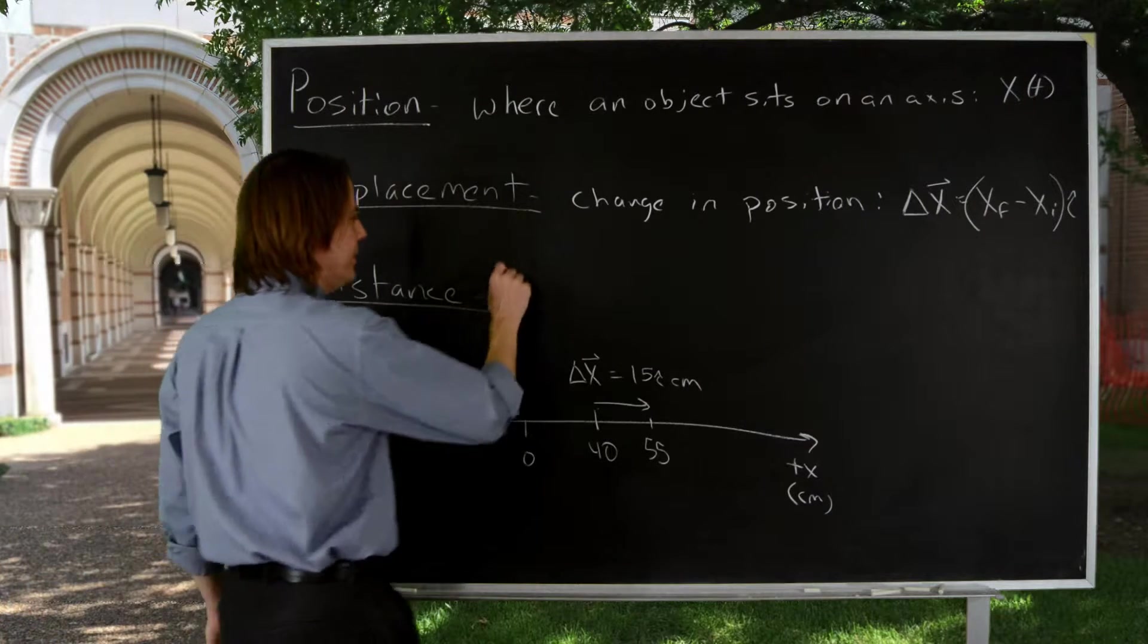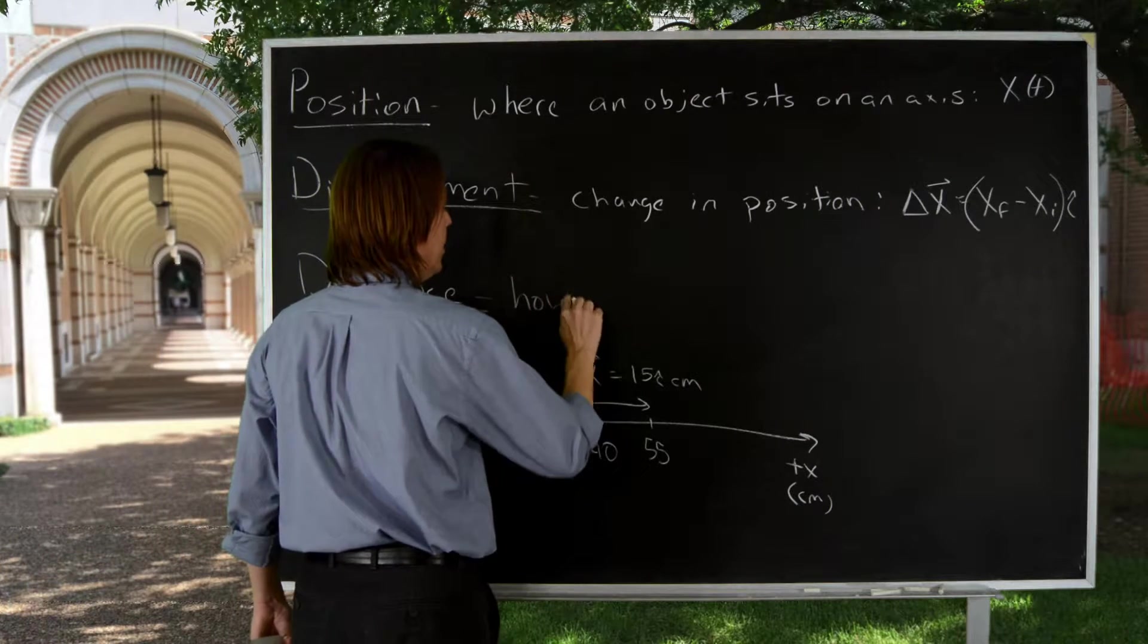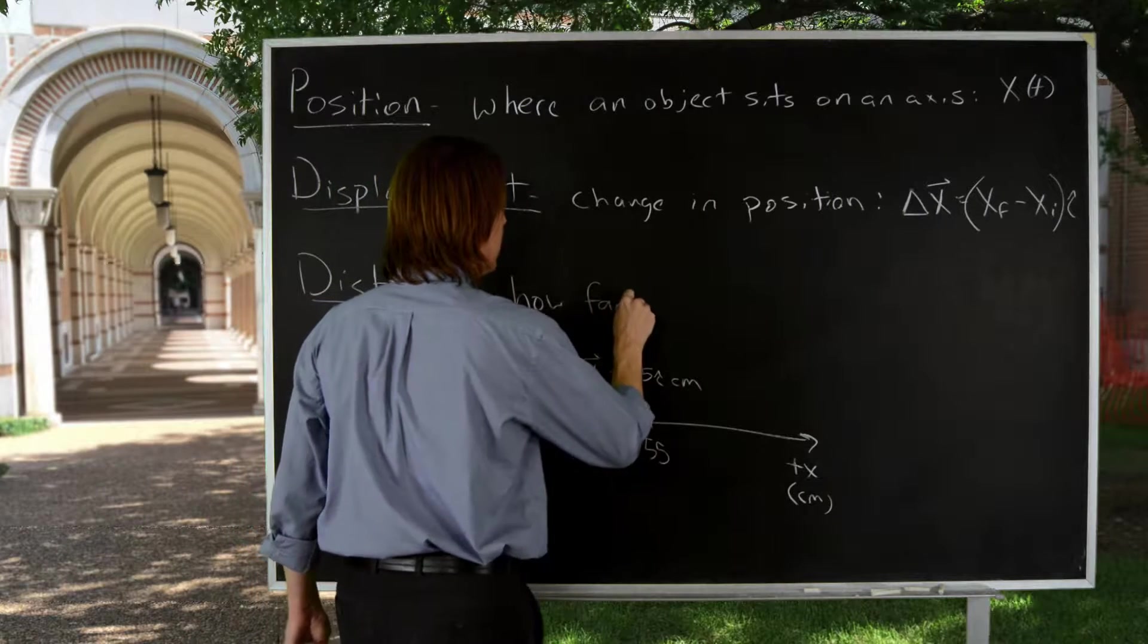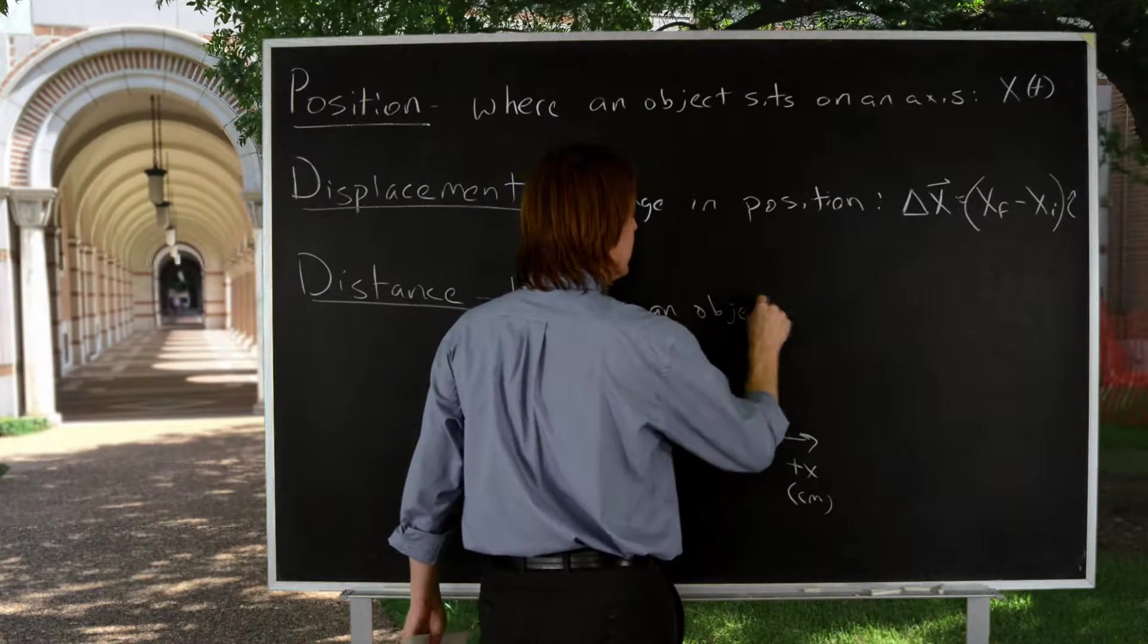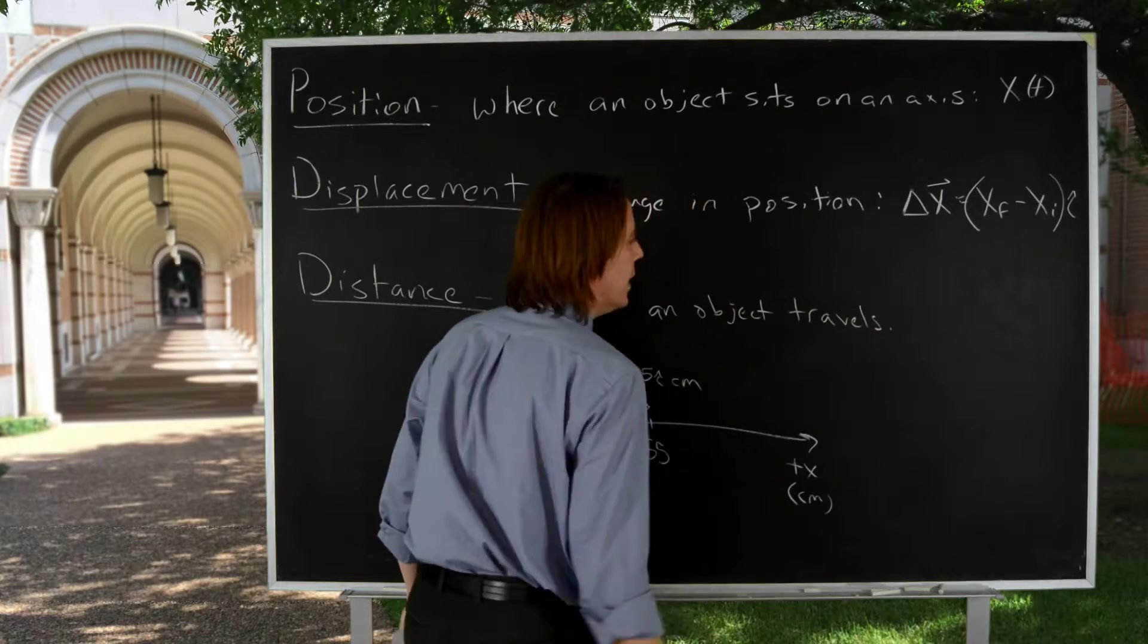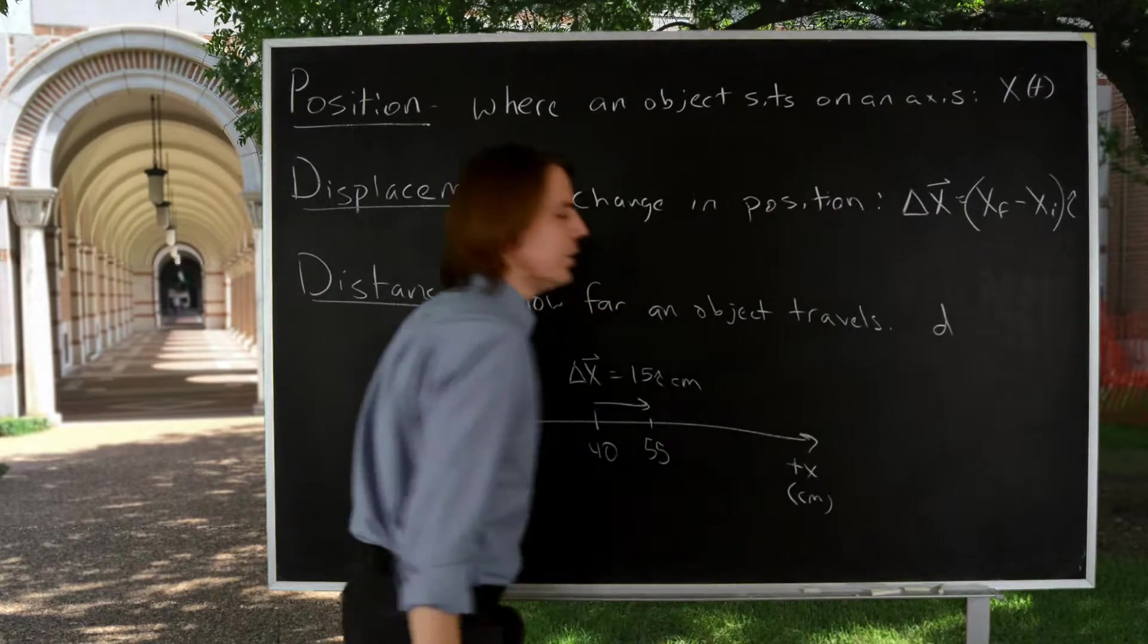Finally, there is distance. Distance is just how far an object travels. And mathematically, we call it D.